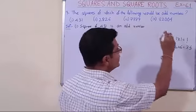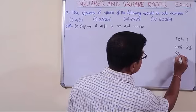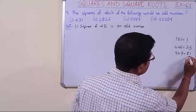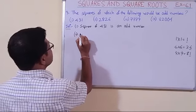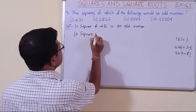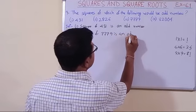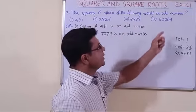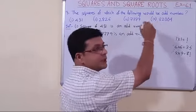Next, let us check 7779. To find the unit digit in its square, we multiply 9 into 9, which gives 81. So the unit digit in the square of this number is 1, which is odd. Therefore, 7779 is one of the answers — the square of 7779 is an odd number.